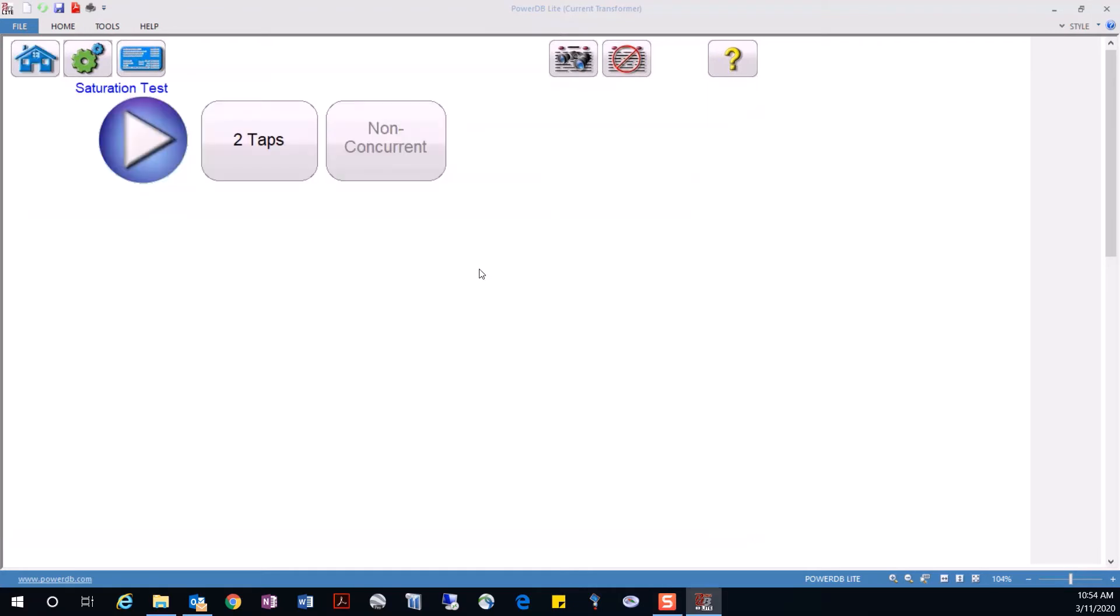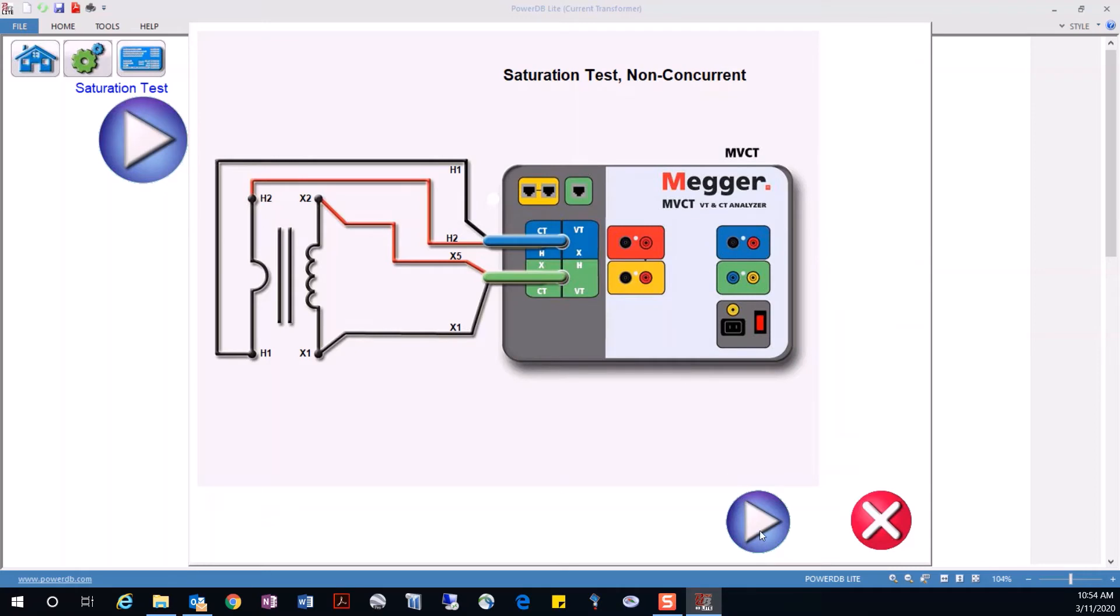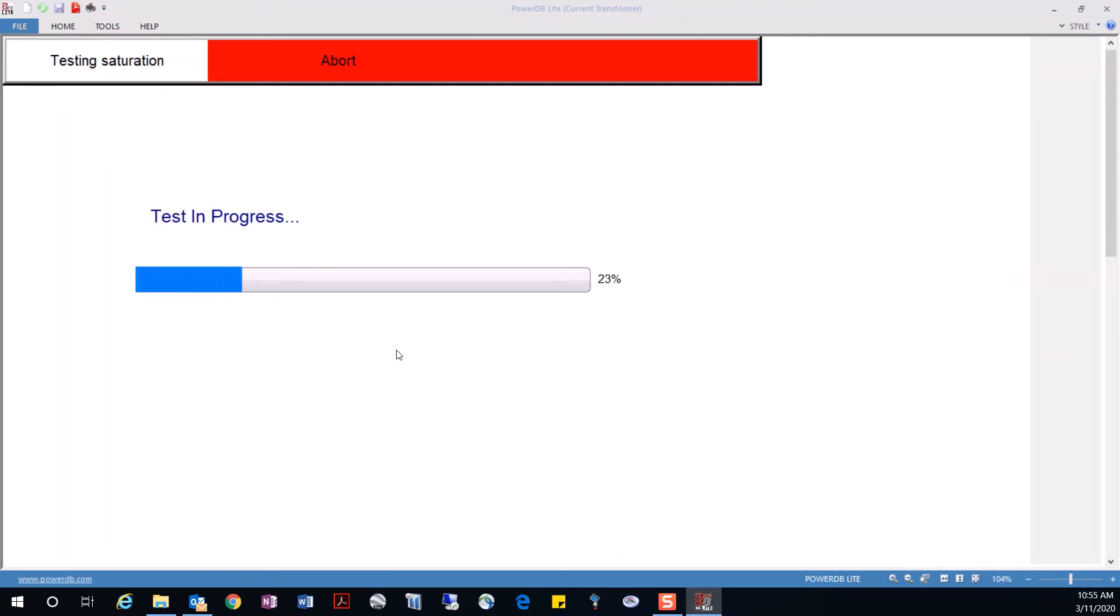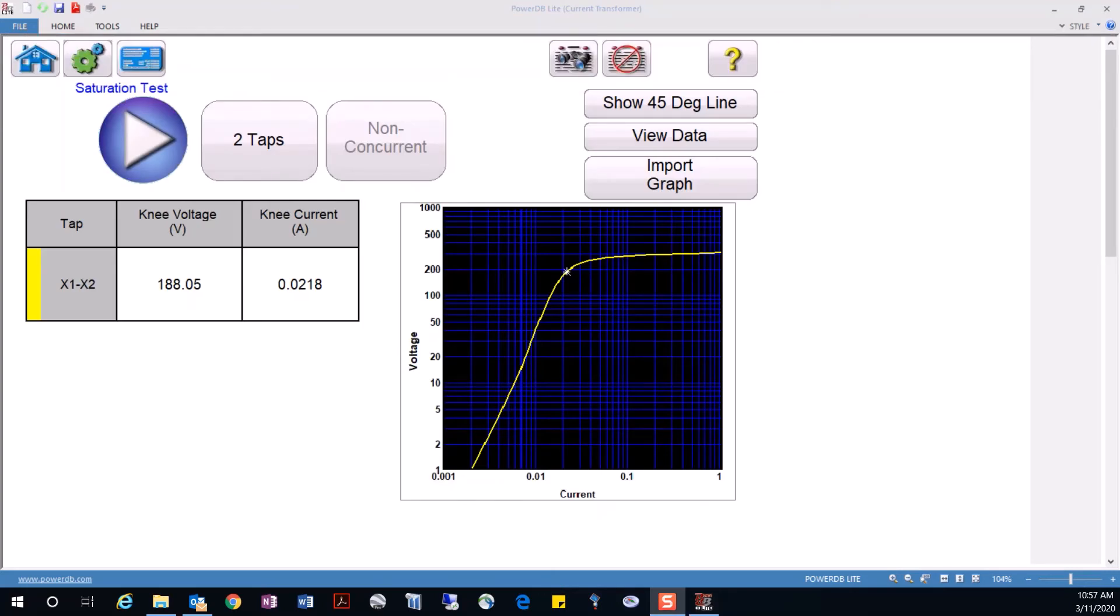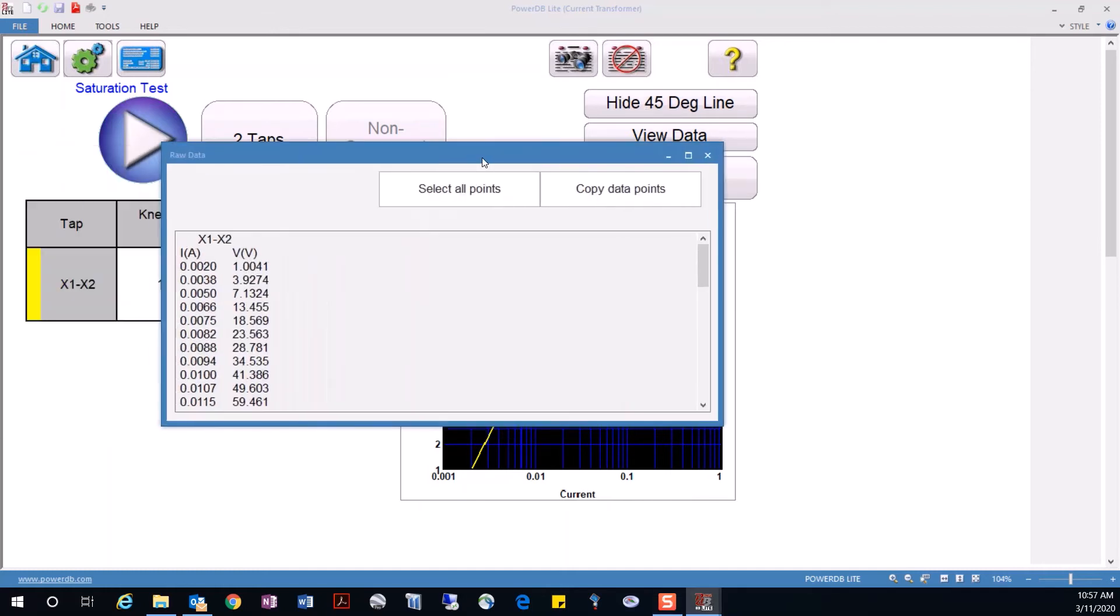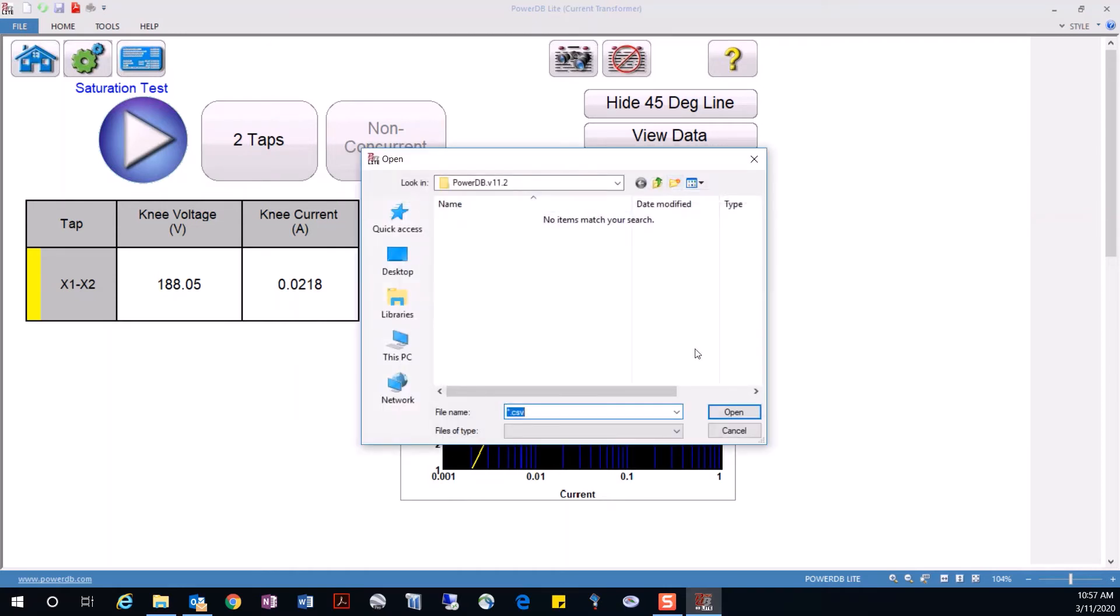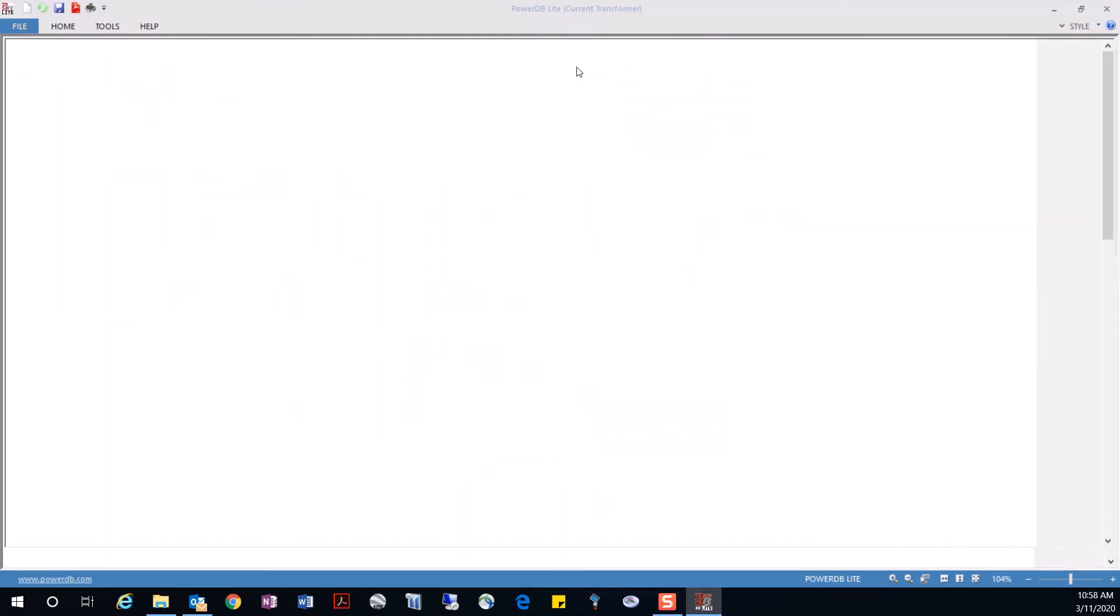The next testing run is for saturation characteristic. We confirm correct connections, hit the run button and testing starts. It is worth pointing out that all these interface screen recordings are fast forwarded in this presentation. The actual instrument takes longer to run the testing. We get the results displaying the saturation curve on the right and the coordinates of the knee point on the left. We have the option of displaying the knee point tangent line, we can view and copy the data points, and we also have the option of importing data points from a previous test for comparison. Finally, we add the results to the customer report.